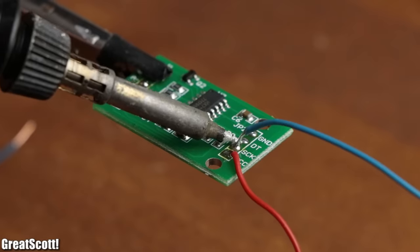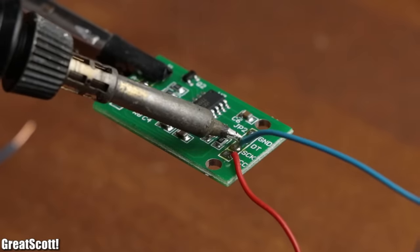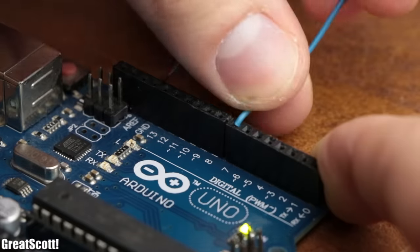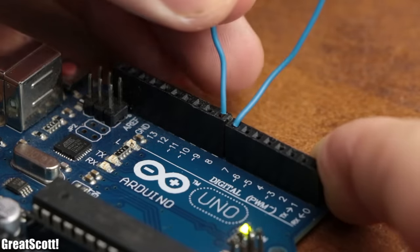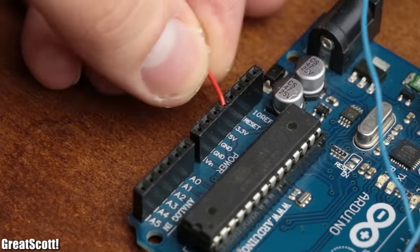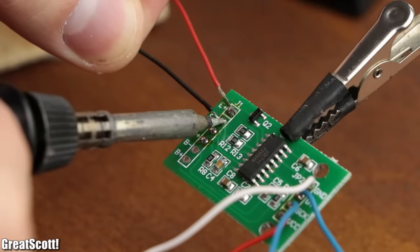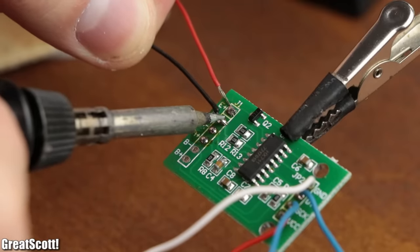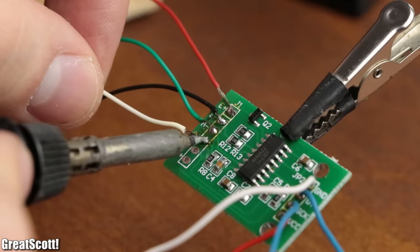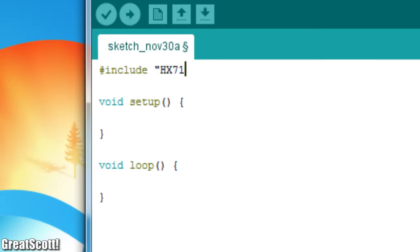By soldering four wires to its right connector pads and thus connecting its data pin to pin 7, its clock pin to pin 8, and its power pins to 5 volts and ground of an Arduino, and connecting its E+, E-, A-, and A+ pads to the load cell wires